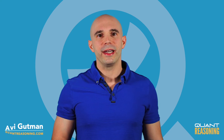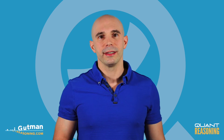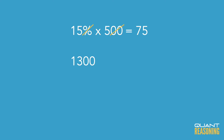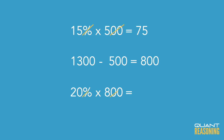Then we read on and find out that we get 20% of any extra sales. That extra in this case is $800 — the difference between 500 and 1300. So what's 20% of 800? Using that same trick, I'll cross out the percent symbol with two zeros and get 20 times 8, which is 160.